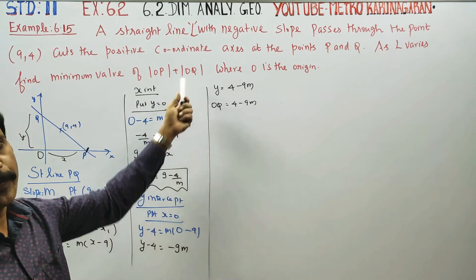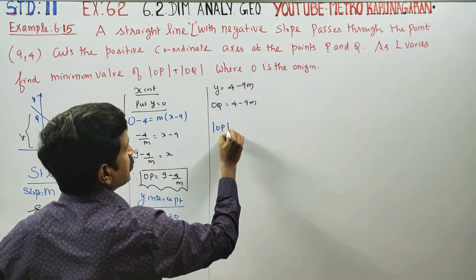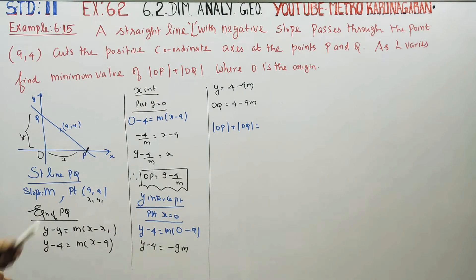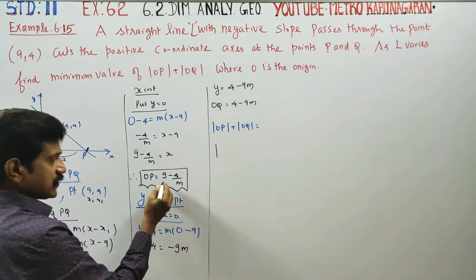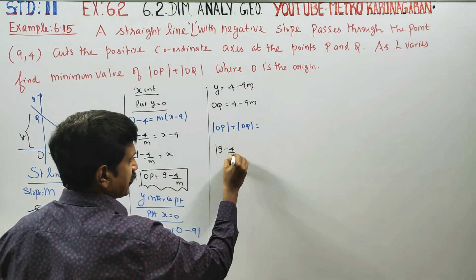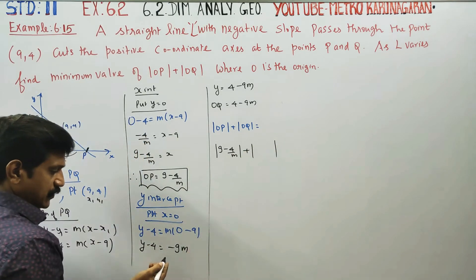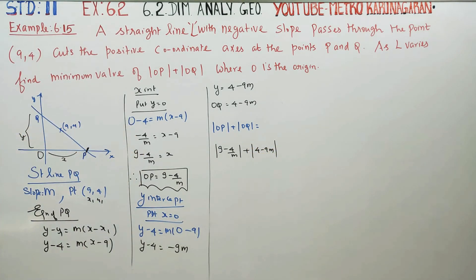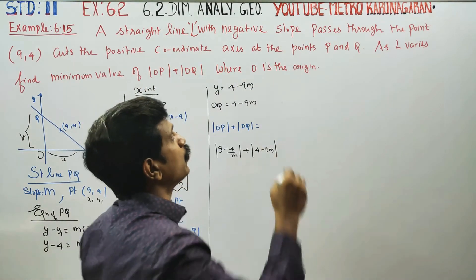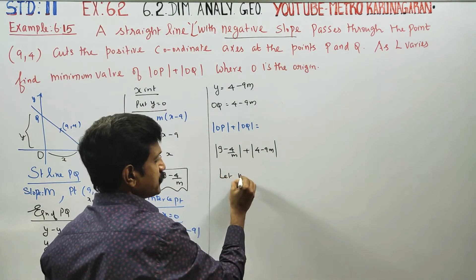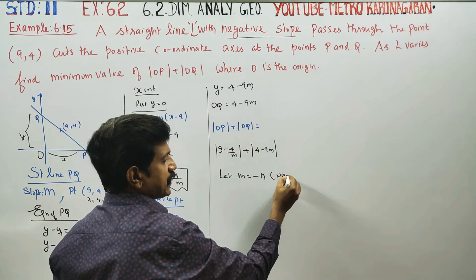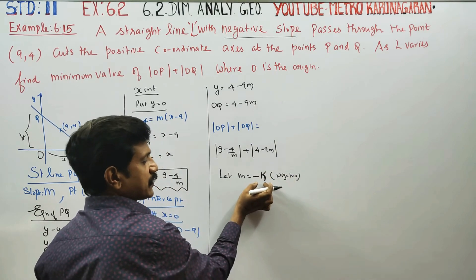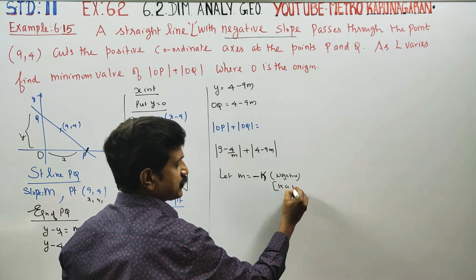The absolute value of OP plus the absolute value of OQ. Since the slope is negative, we let m = -k where k is a positive integer. This is the negative slope condition.